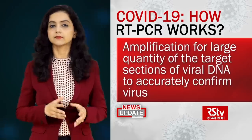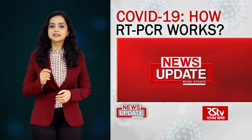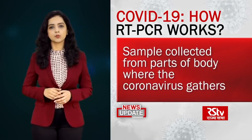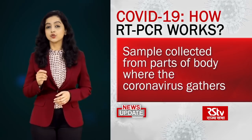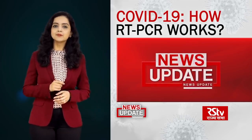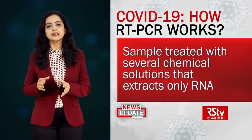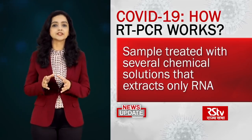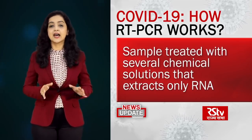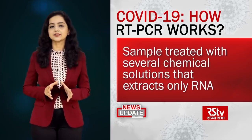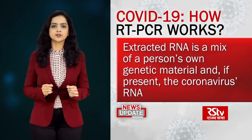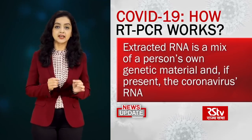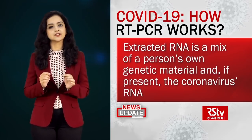How does real-time RT-PCR work with the coronavirus? A sample is collected from parts of the body where the coronavirus gathers, such as a person's nose or throat. The sample is treated with several chemical solutions that remove substances such as proteins and fats, and extracts only the RNA present in the sample. This extracted RNA is a mix of a person's own genetic material and, if present, the coronavirus's RNA.